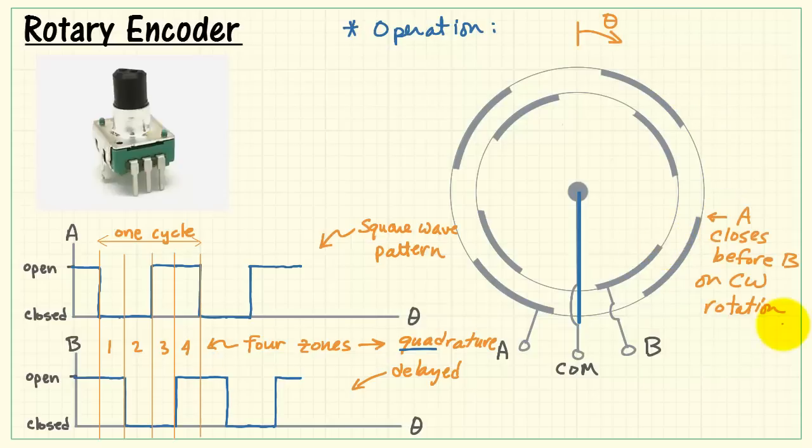Now these waveforms are based on A closing before B, and that occurs whenever we have clockwise rotation. However, if you back up the knob and it rotates in the counterclockwise direction, then we see that A closes after B.